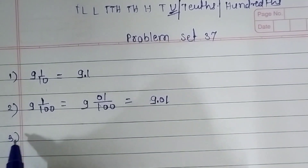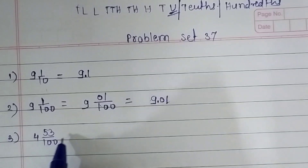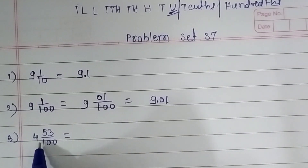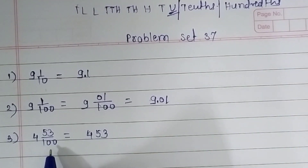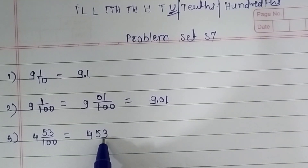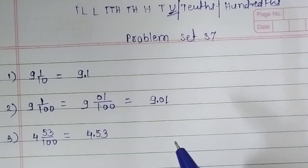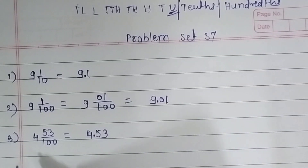Now the third question: 4 and 53 upon 100. Here we have the tenths place. We write the number, and since the denominator has two zeros, we move two places from the right — 1, 2 — and place a decimal point. The fraction is 4.53. It's so easy.